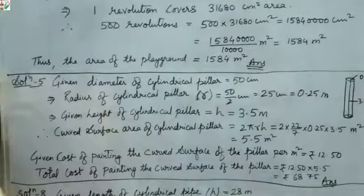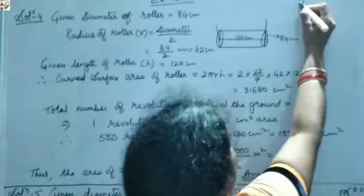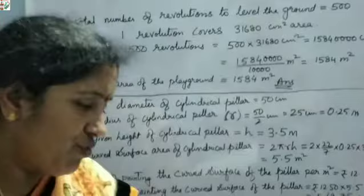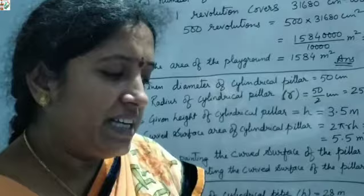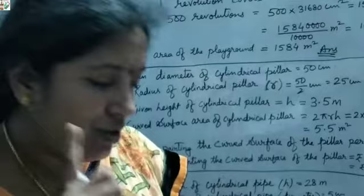The 6th and 7th questions are for homework — they are simple. For question 6: the curved surface area of a right circular cylinder is 4.4 m². The radius of the base is 0.7 m. Since 2πRH = 4.4, you can find H by substituting the value of R.